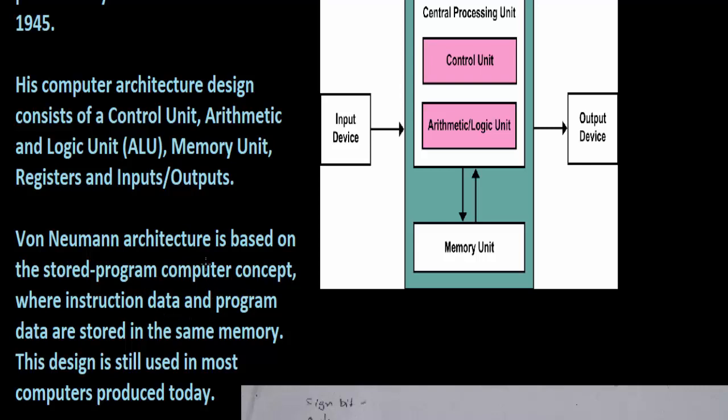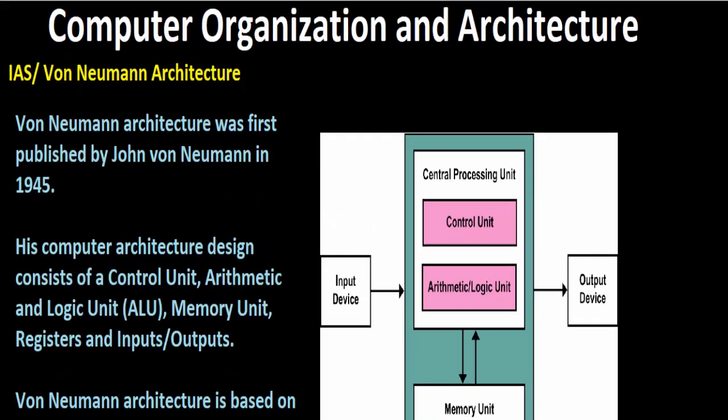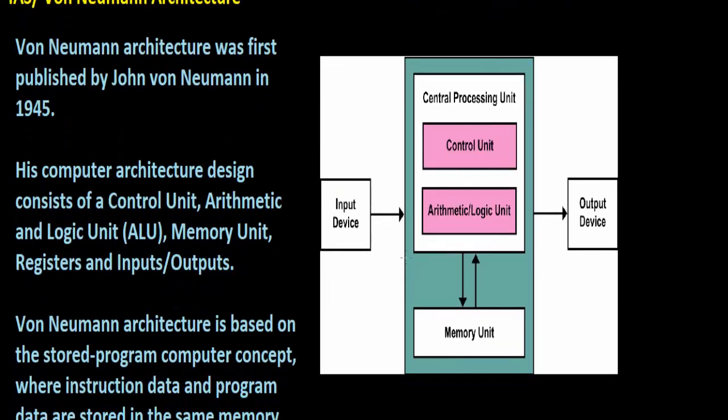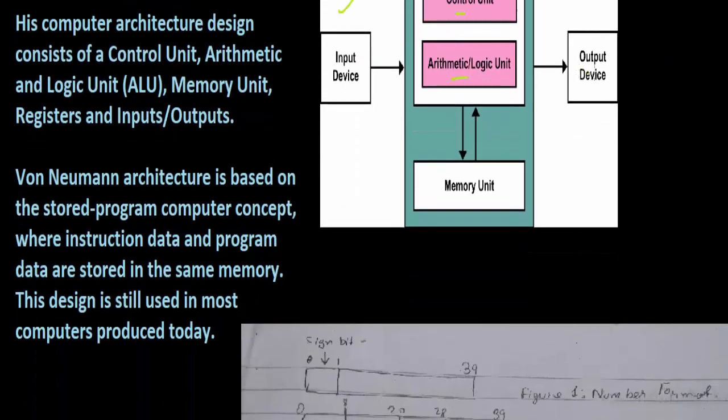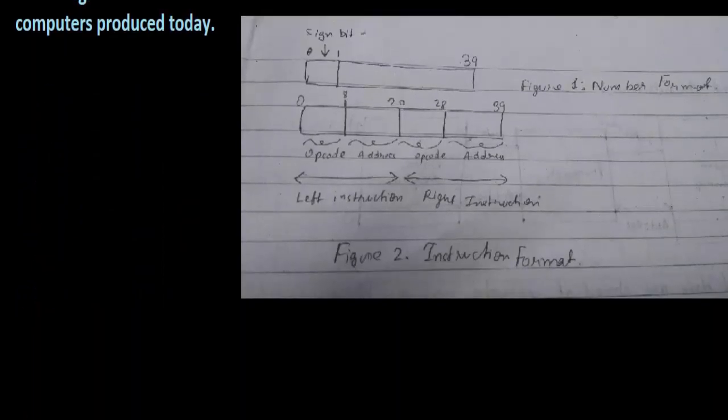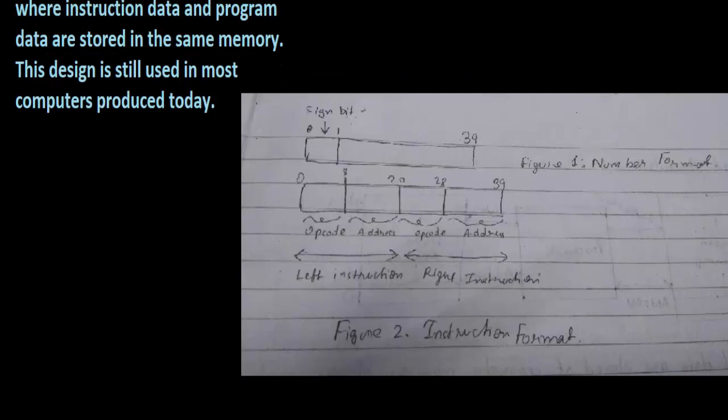This is just the architecture. Input device sends it to CPU - a control unit, the arithmetic and logic unit ALU, and memory. All of this will be used in the same memory, and after that it will go to the output. I'll just draw it. The size starts from zero, so this is figure one.